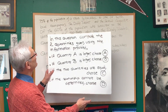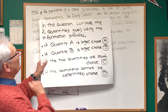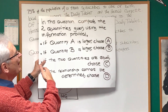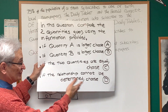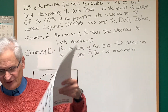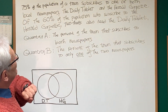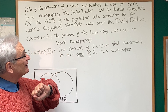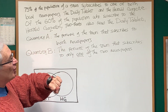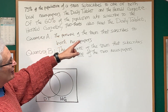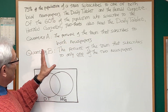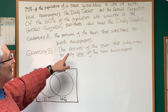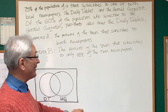Here we go with the comparison question. Compare the two quantities given using the information provided. If quantity A is larger, choose A. If quantity B is larger, choose B. If the two quantities are equal, choose C. If the relationship cannot be determined, choose D. The problem: 75% of the population of the town subscribes to one or both local newspapers, the Daily Tablet and the Herald Gazette. Of the 60% of the population who subscribe to the Herald Gazette, two-thirds also read the Daily Tablet. Quantity A is the percent of the town that subscribes to both newspapers; Quantity B is the percent of the town that subscribes to only one of the two newspapers.